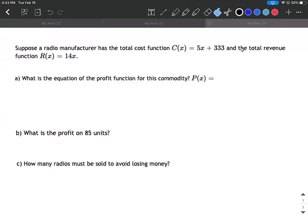Okay, on this problem, we have a radio manufacturer that has a total cost function C(x) = 5x + 333, and a total revenue function R(x) = 14x.